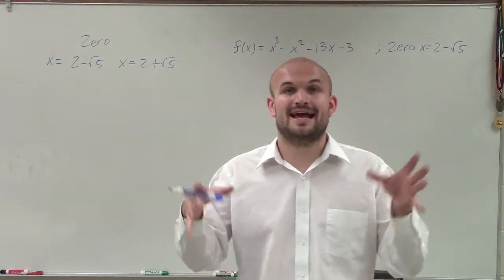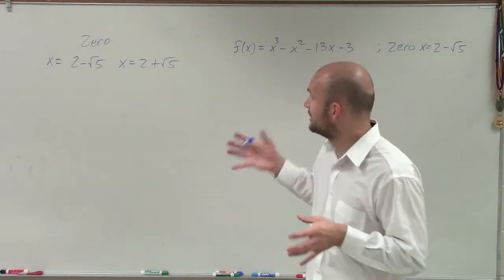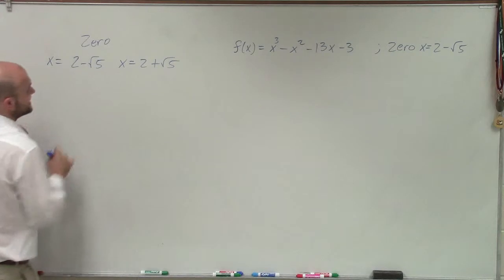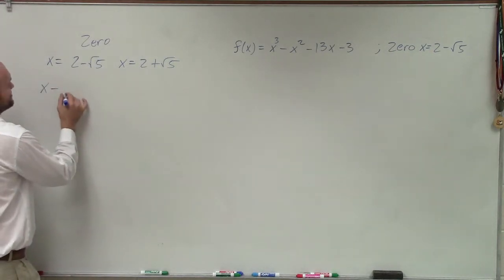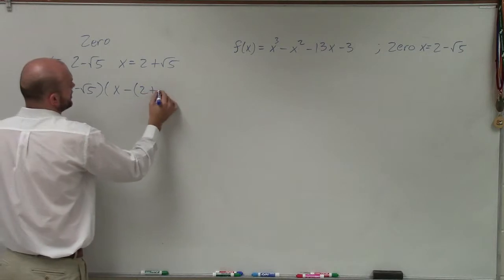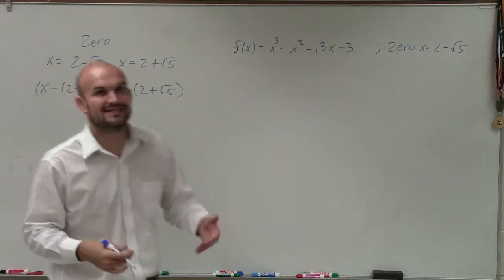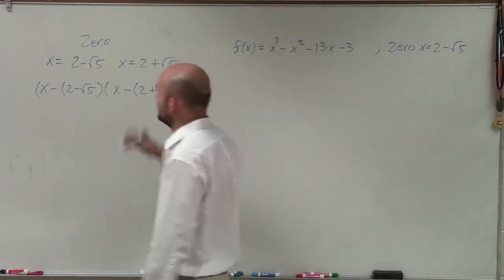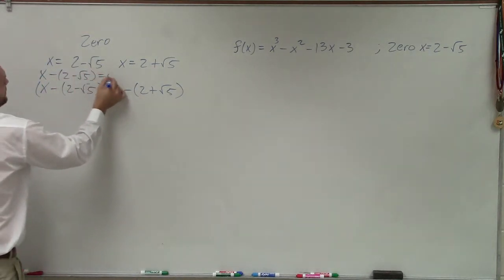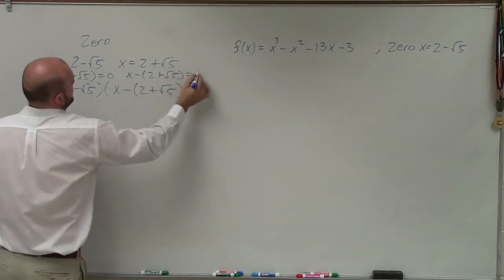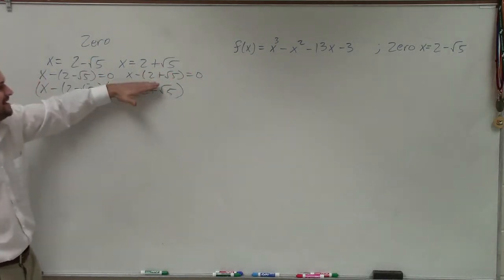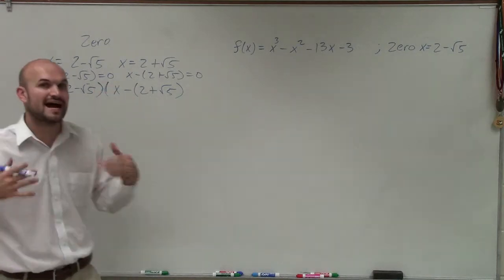So what I can do now is multiply these to get a quadratic factor that I can divide using long division to find my remaining factors. I'm going to set these as factors. So I have x minus (2 - √5) times x minus (2 + √5). What I did is set them equal to 0: x - 2 - √5 = 0 and x - 2 + √5 = 0. To get the zeros I solved for x, and now I can write them as factors and multiply them.